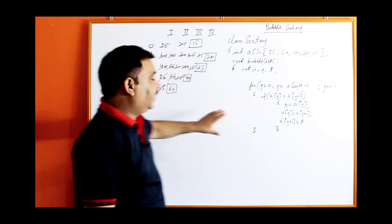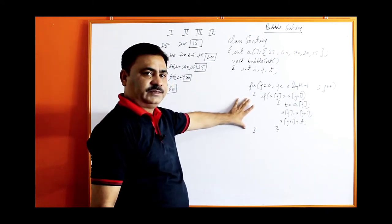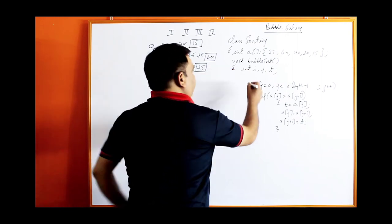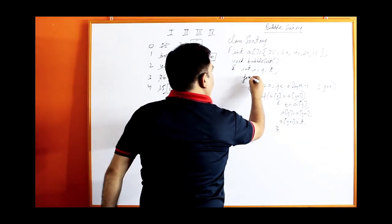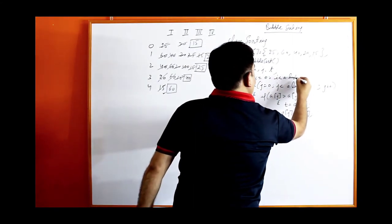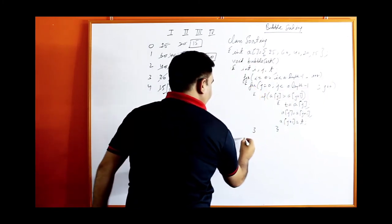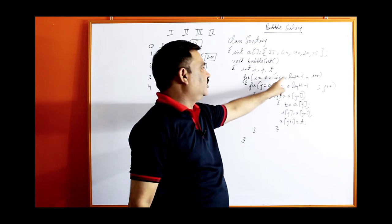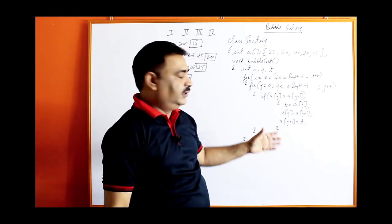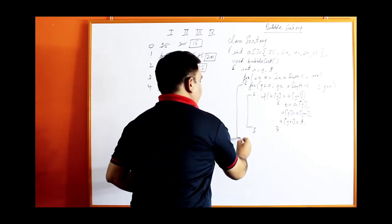So this inner loop will execute 4 times and will arrange only one value — 60 will be placed at its correct position. Now we have to repeat the same process, so we need a nested loop. Make one more outer loop: for I equal to 0, I is less than A.length minus 1, I plus plus. We need 4 iterations, so I goes from 0 to 3. This is the outer loop and the previous one is the inner loop.